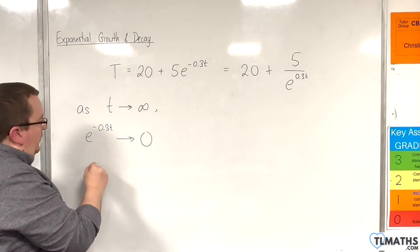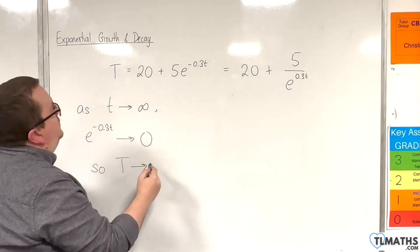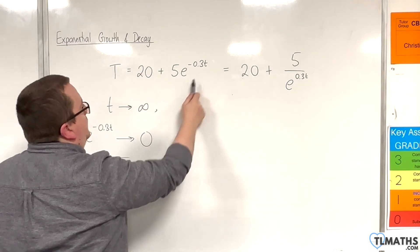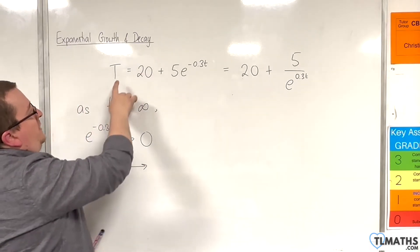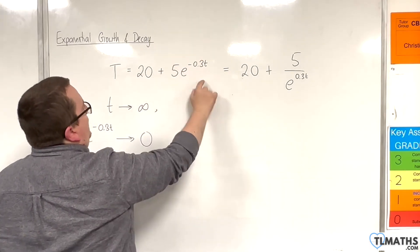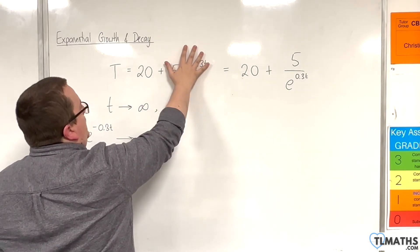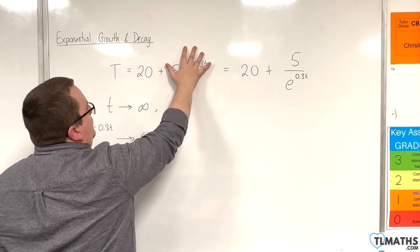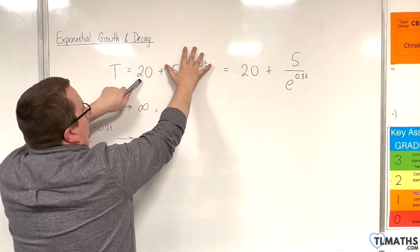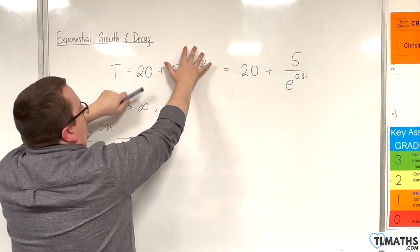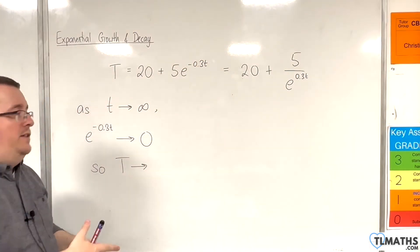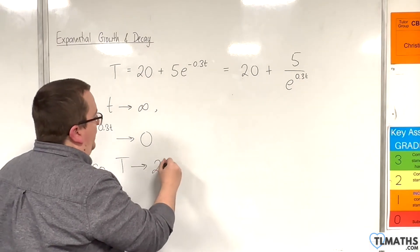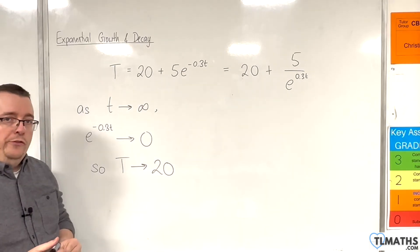So if that term is tending towards zero, then as it gets closer and closer to zero, you can think of it getting so small that you could ignore it, and the temperature will get closer and closer to 20. That might be 20 degrees centigrade or 20 degrees Fahrenheit depending on the units, but capital T is tending towards 20.